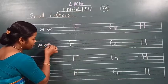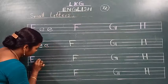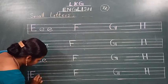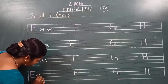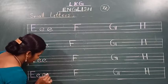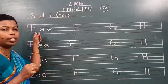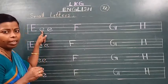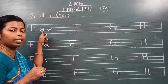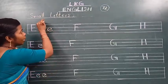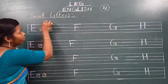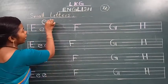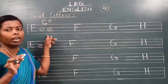Aagaya sabko? Likho sabbis ke saath. Small letter E. E for elephant. Okay, E for elephant. This is capital letter E. This is small letter E. E kaise likhna hai? Samajh mein hai kya? Dekho — sleeping line banana hai, then curve curve banana hai. E, okay? E for elephant.